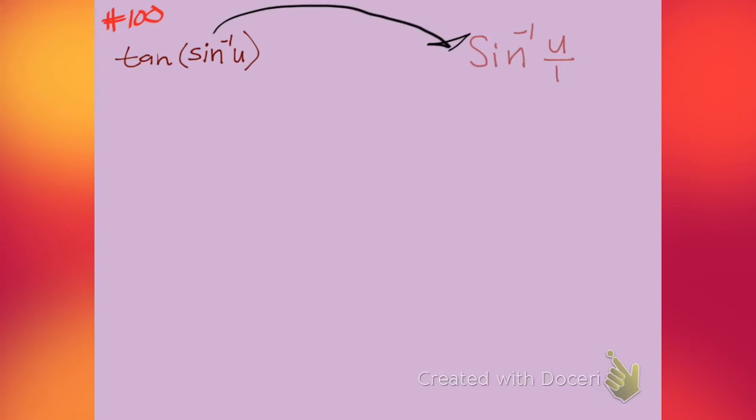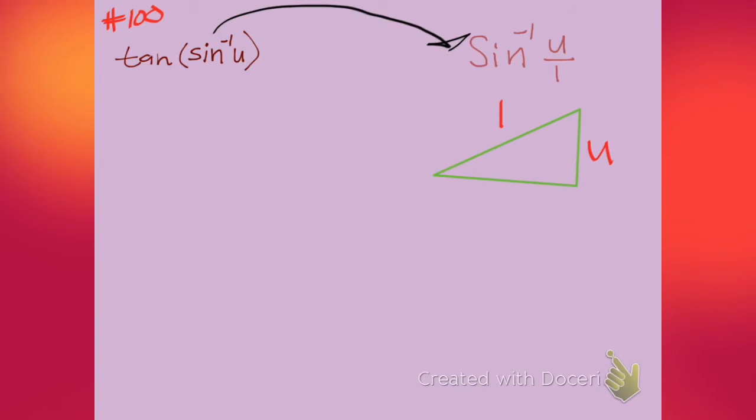Let me just take this over here. The sine inverse of u over 1, that's our theta, and it defines our triangle. Our sine is our opposite over our hypotenuse. That's why I put my u opposite our angle theta and our hypotenuse 1, because u over 1 is the same as u.